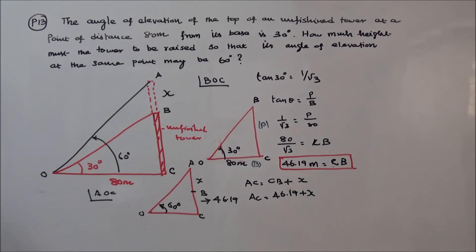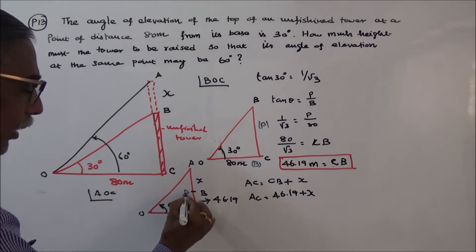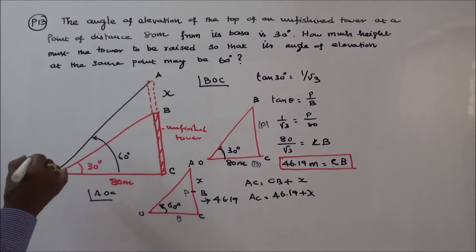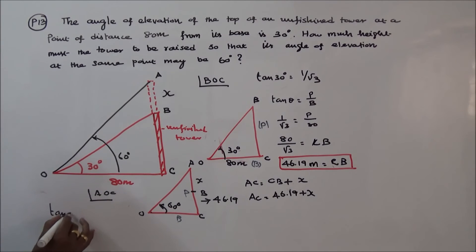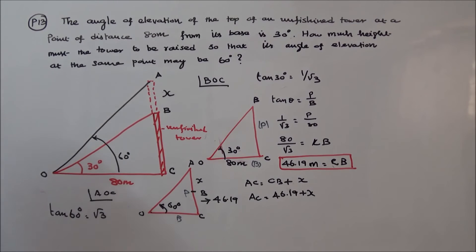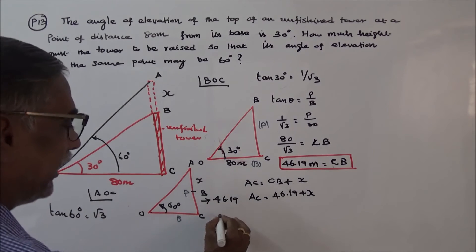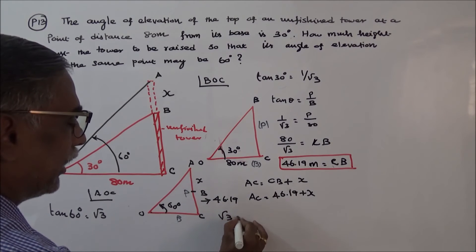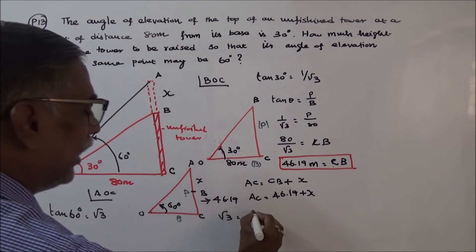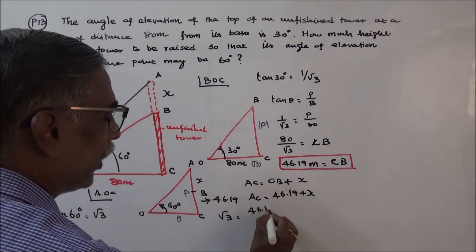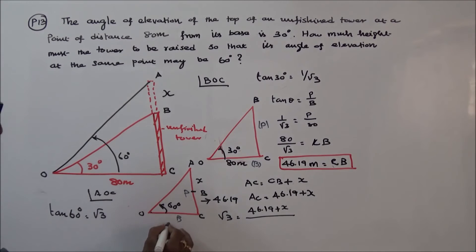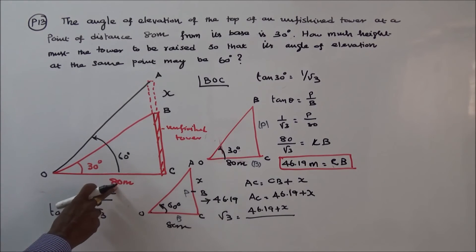So AC is the perpendicular and the base is 80 meters. Again, tan theta equals perpendicular by base. Tan 60 is equal to root 3. So root 3 equals perpendicular over base, that is 46.19 plus X divided by 80. The base is 80 meters — same as before.